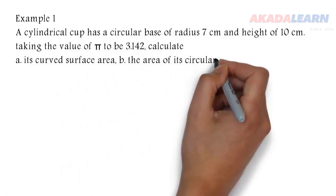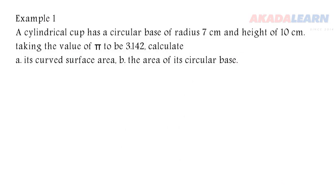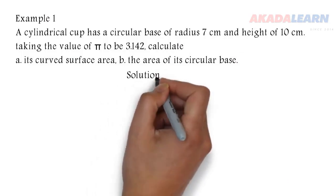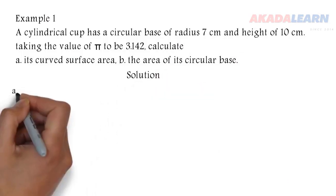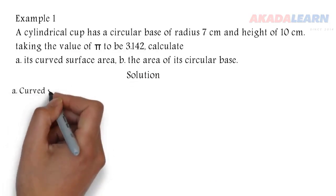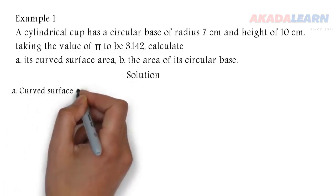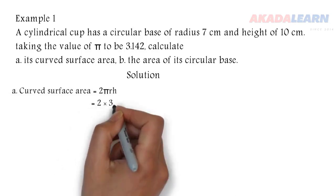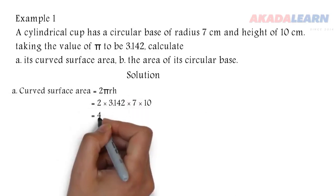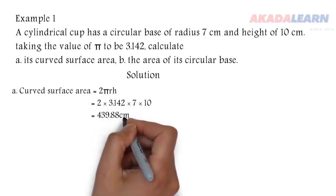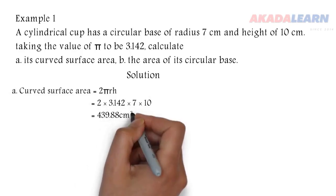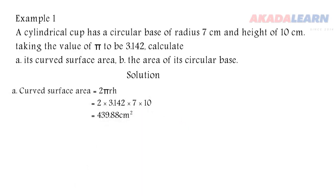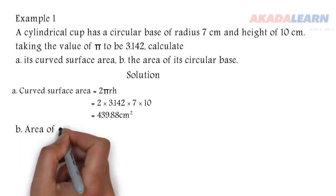Let's see how to do that. The curved surface area of a cylinder is given by the formula 2πrh. We substitute into the formula and get our answer: 439.88 centimeters squared, because we are talking about area.